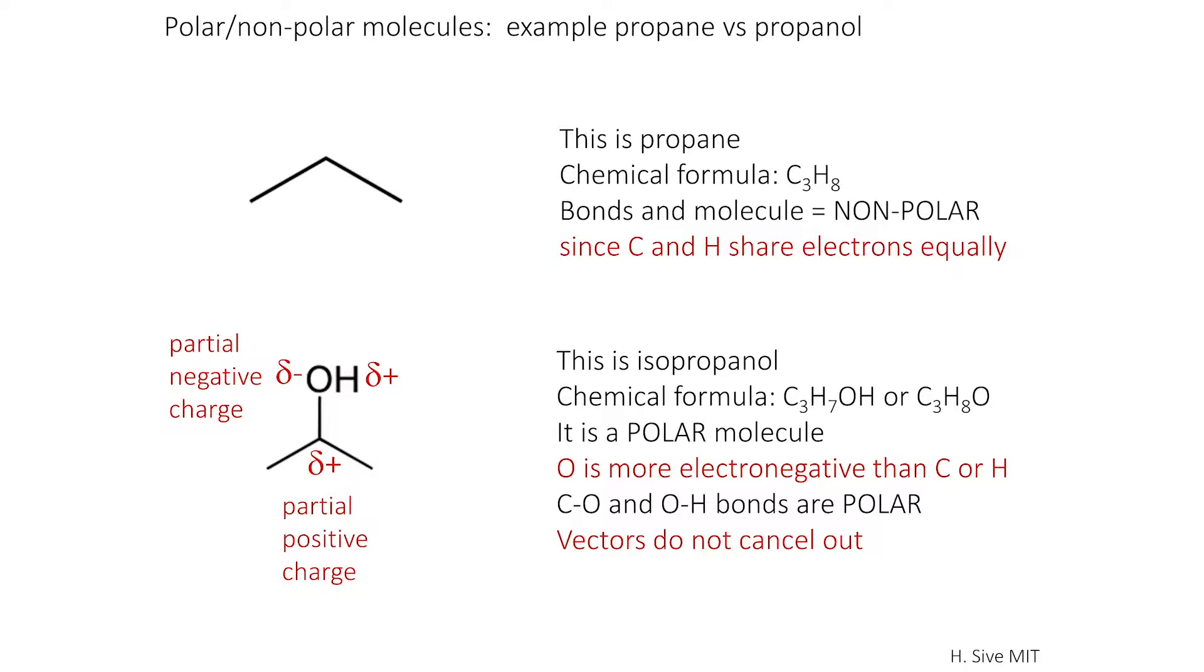Here are two examples. One is polar, and one is not polar. The top example is propane, which has the chemical formula C3H8. It is just carbons and hydrogens.